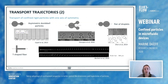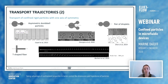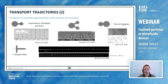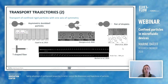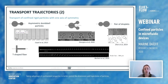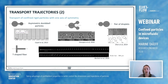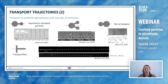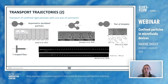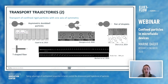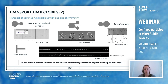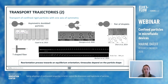If we complexify the problem and look at rigid particles with only one axis of symmetry — for example asymmetric dumbbell particles, Mickey Mouse shapes, a pair of droplets, or a T-shaped fiber — you can see that in all these examples we have the same behavior. There is a reorientation process until an equilibrium orientation is achieved, where the mirror axis is aligned with the flow direction and the upper part is upstream. The only difference across these experiments is the timescales, which depend on the particle shape.